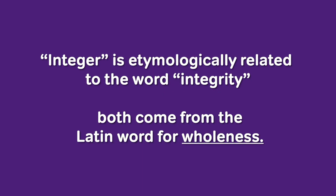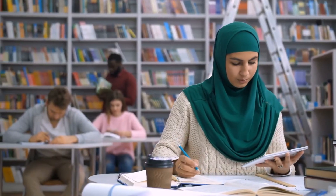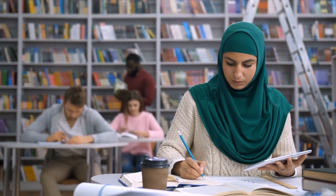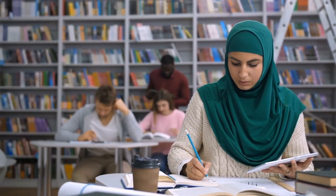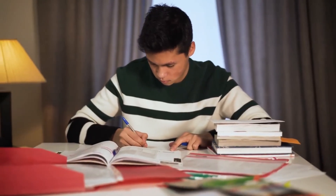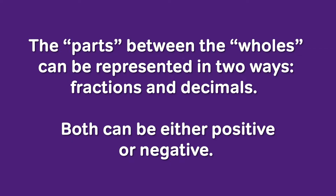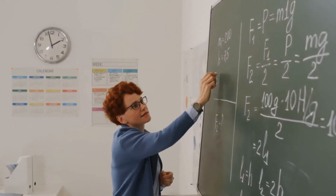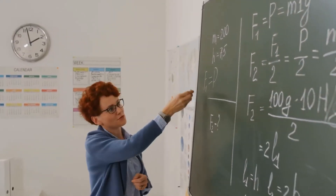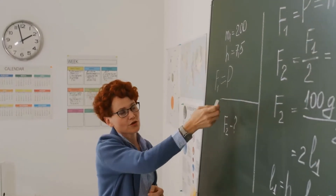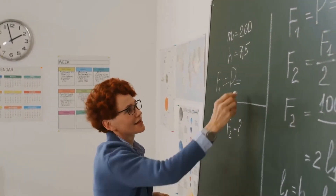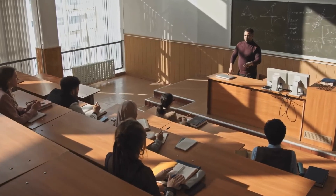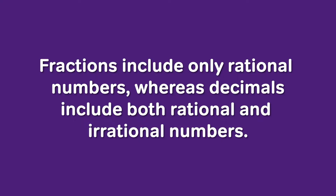The word 'integer' is etymologically related to the word 'integrity' — both come from the Latin word for wholeness. Each integer is, as it were, a unique wholeness, a complete package in and of itself. The parts between the whole numbers can be represented in two ways: fractions and decimals. Both can be either positive or negative, and each system has its own advantages under certain circumstances.